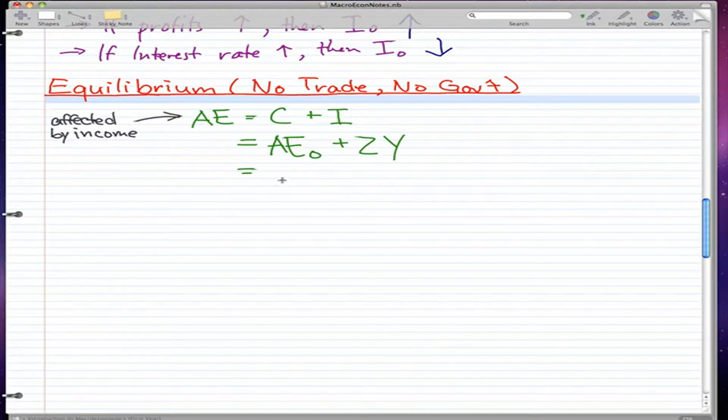We also learned in the last video that C is equivalent to C₀, which is autonomous consumption, plus B, the marginal propensity to consume, times YD. And YD is our disposable income.